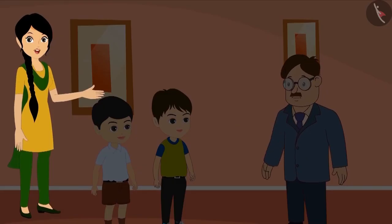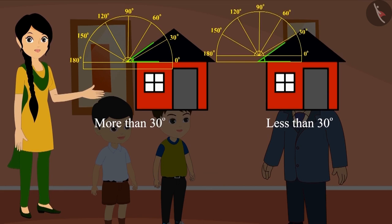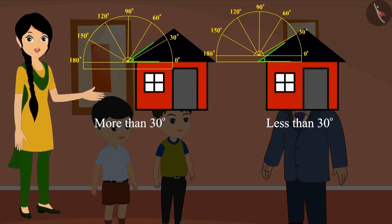Golu and Bholu showed their uncle the measurements of the angle. This time Bholu's measurement was more than 30 degrees and Golu's measurement was less than 30 degrees. Can you tell which answer is correct? If you want, you can pause the video here and think for a while.